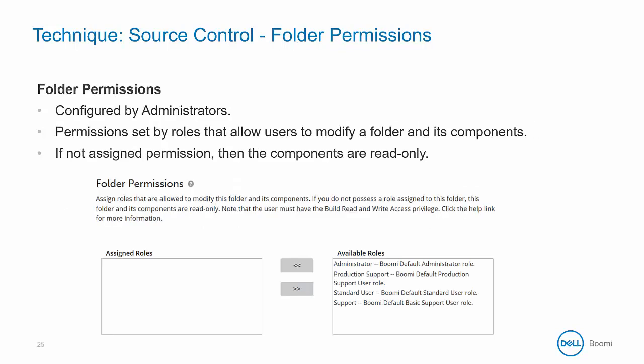One thing you can do to control edits and changes to a component or process is to use folder permissions. Permissions are configured by administrators, and users are assigned roles by these administrators, and those roles get permissions to certain folders. Folder permissions control editing capabilities but not the visibility of the folder, so if a user does not have permission to a component, they have read-only access for that component.